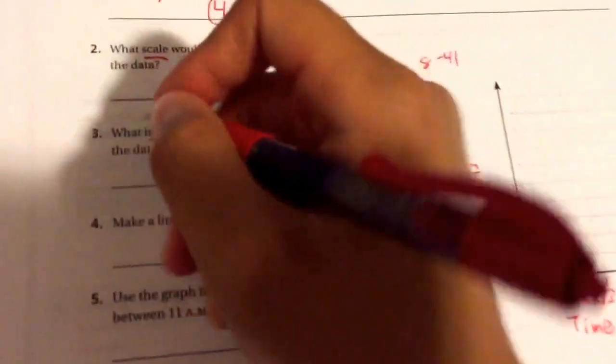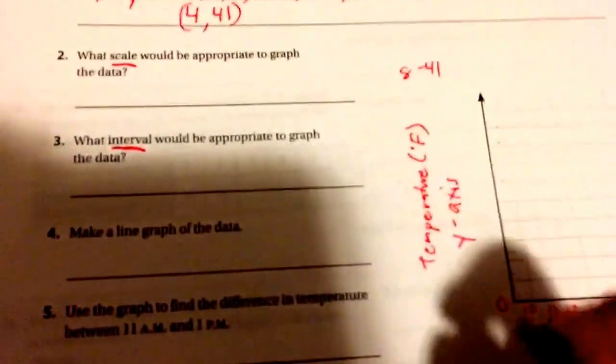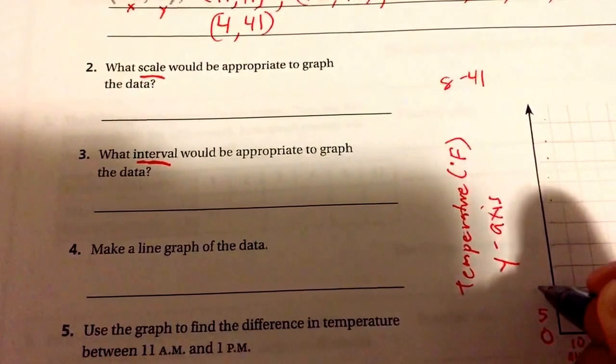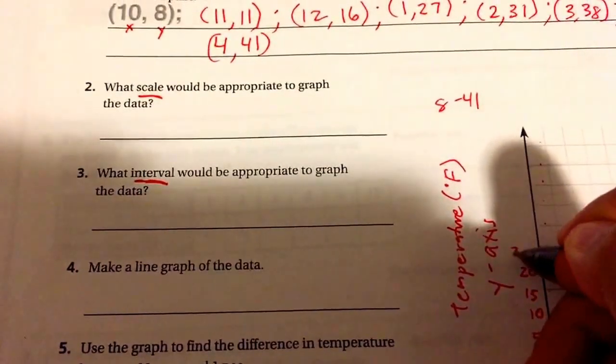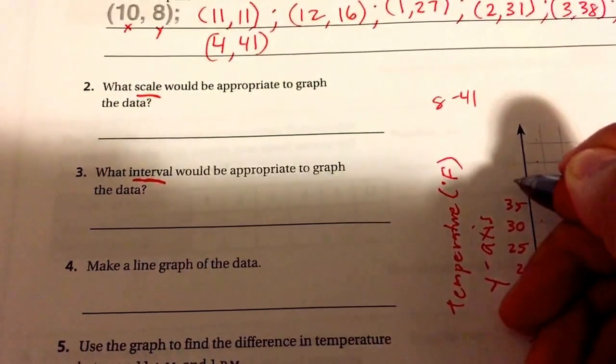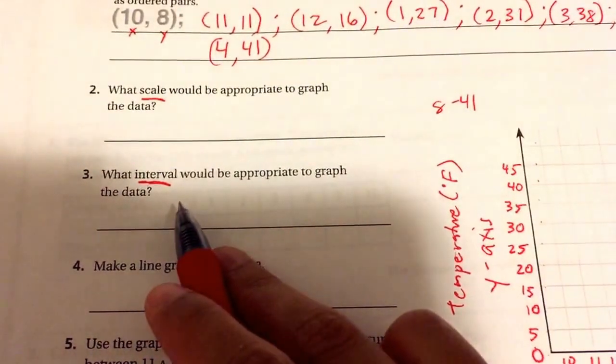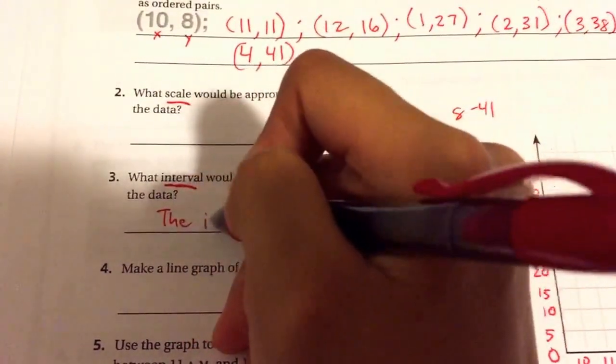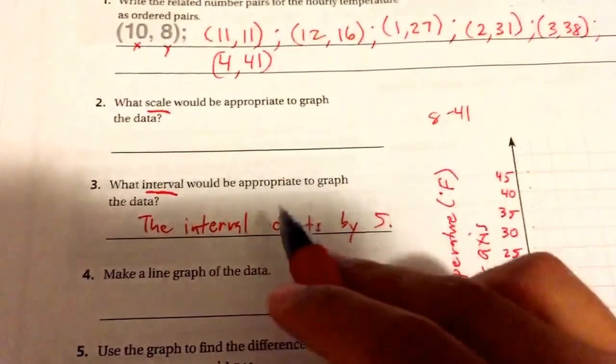For myself, I'm going to probably use the 5s. So you could choose to use 4 if you want, so your answer is going to be slightly different. But I'm going to use 5, 10, 15, 20, 25, 30, 35, 40, 45. Now, because I used 5, my only acceptable answer here would be the interval counts by 5s or increases by 5.